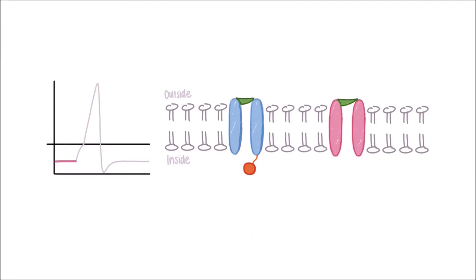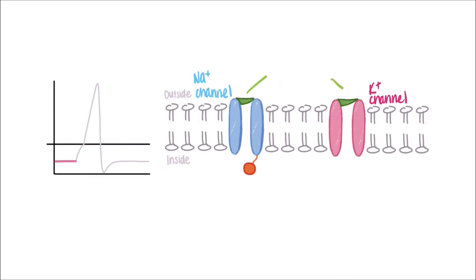I have drawn a basic diagram here of the ion channels in the membrane. This blue channel is going to be the sodium channel, while this pink one on the right is the potassium channel. The top represents the outside of the cell, and the bottom here represents the inside of the cell, or the cytosol. These green flaps at the top represent the activation gates of both the sodium and potassium channels, while this little ball at the bottom represents the sodium inactivation gate.